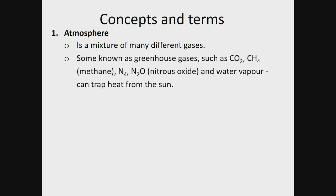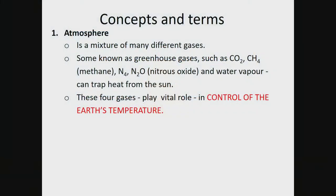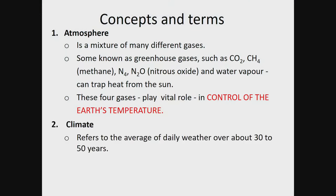Now let's start with atmosphere. What is atmosphere? First of all, it's a mixture of gases. The greenhouse gases include carbon dioxide, methane, nitrous oxide, and water vapour, because they all trap heat from the sun. Why is it important? Because they maintain our temperature on Earth — they are there to control our temperature. But what happens if there's too much of it?